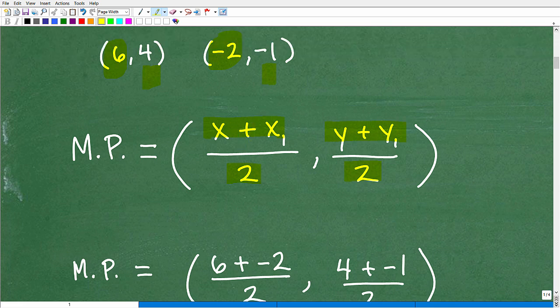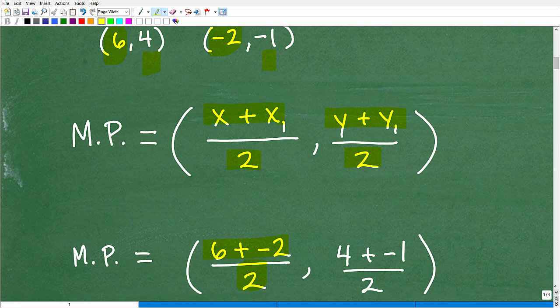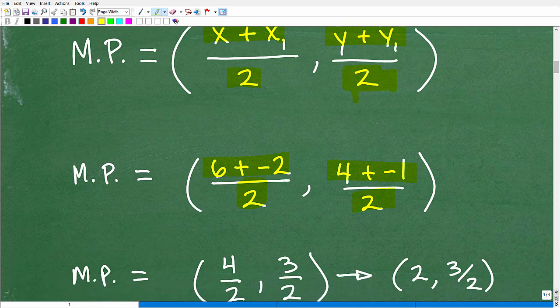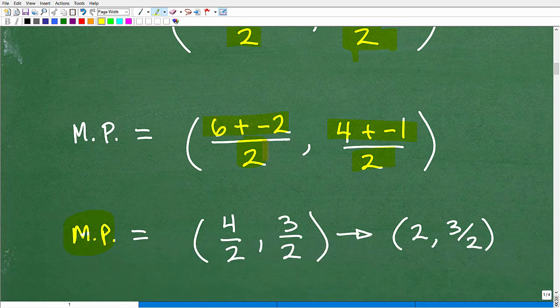And then when we simplify all this math, we are going to have the actual midpoint. So our x's here is 6 and negative 2, so we're going to take 6, add it to negative 2, and divide it by 2. And then we're going to average our y's, which is 4 plus negative 1, and then we'll divide that by 2. Let's go ahead and simplify that. So our midpoint is going to be 6 plus negative 2, which is of course 4 over 2, and then 4 plus negative 1 is going to be 3 over 2. And when we simplify that, 4 over 2 is 2, and then we have 3 halves right here. And that is our answer.